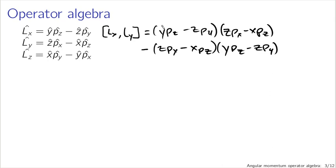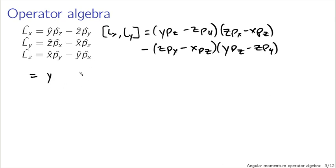When I calculate the product Y PZ times Z PX, I have to keep the relative order of PZ and Z constant, but I can move PX and Y wherever I want. What I get is Y PX times (PZ Z), with PX moved to the left since it commutes with PZ and Z. I'll keep PZ and Z in parentheses to signify they must stay in that order.